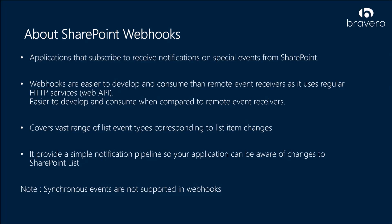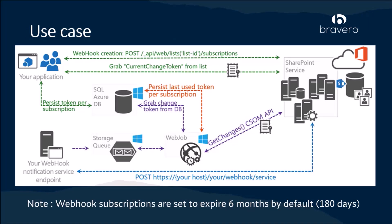SharePoint webhooks provide a simple notification pipeline so your application can be aware of these changes. The use case I have used is from the Microsoft documentation itself. I have created a SharePoint webhook as an Azure function which uses the HTTP trigger. The function URL is then added as a webhook subscription to the intended lists or libraries, and the function will be triggered whenever there is a change in those lists or libraries. Once triggered, the function receives the notification from SharePoint and processes it.